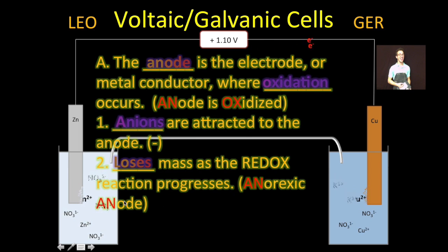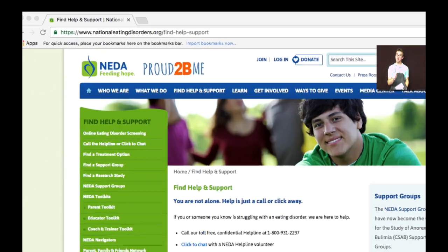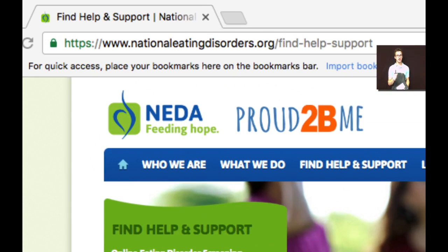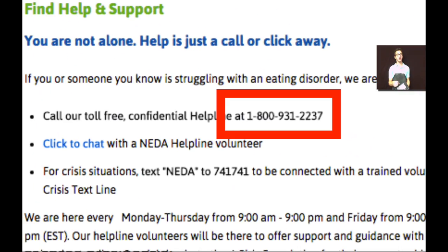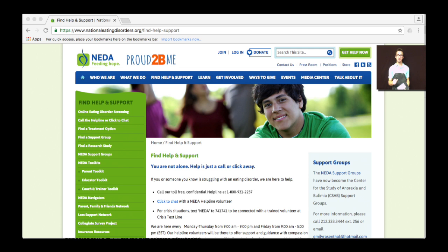A couple of important mnemonic devices here. Anox: anode is oxidized. Anorexic anode, because the anode will lose mass as the reaction progresses. Important side note: anorexia is a serious disease. And if you or someone you know suffers from anorexia, reach out. There is help available.